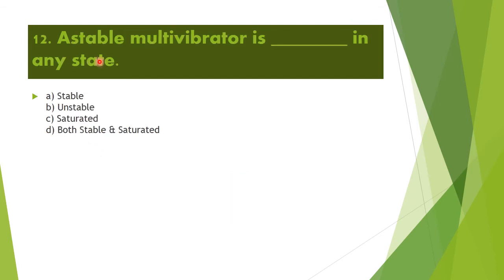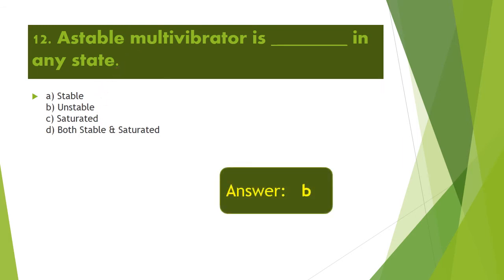Next question: An astable multivibrator is in what state? An astable multivibrator does not have any stable states — therefore it is unstable. Option B is the right answer.